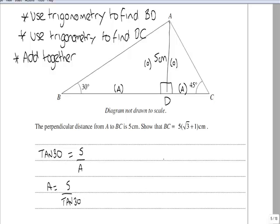In our second triangle we have a similar situation. Tan 45 is equal to 5 over A. Therefore A in this case is equal to 5 over tan 45.